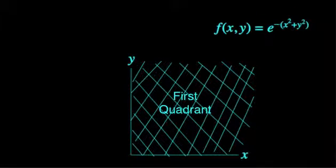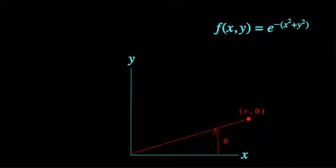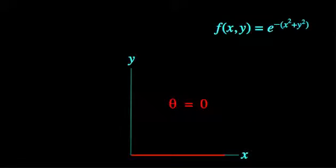Now in order to evaluate I squared over the entire first quadrant, we will need to switch from Cartesian to polar coordinates. The first quadrant, of course, is bounded by theta values from 0 to pi over 2, with r extending from 0 to infinity.